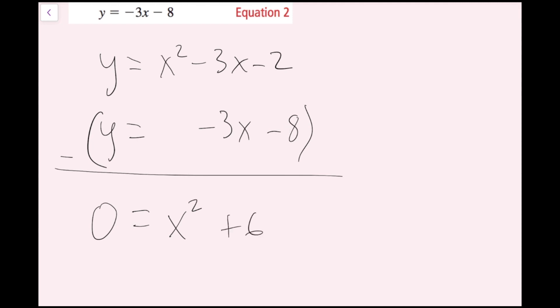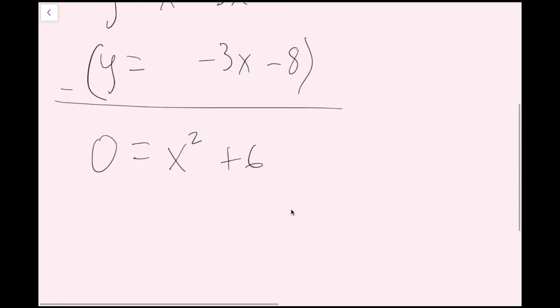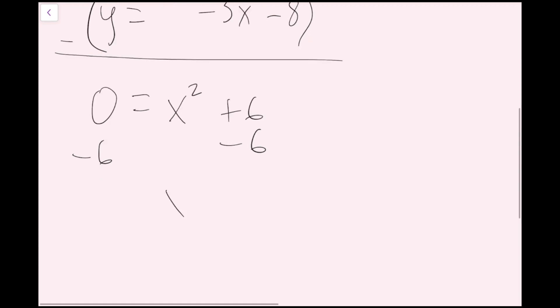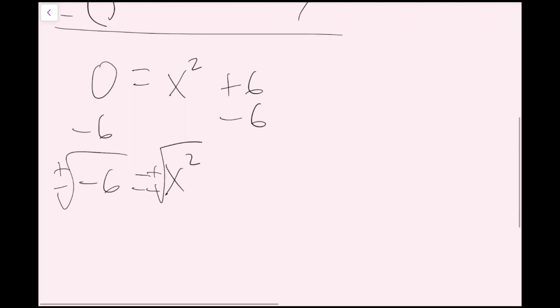This equation is much easier to solve — I can just use square roots. If I subtract 6 on both sides, I get x squared equals negative 6. Taking plus or minus the square root of both sides, I'm taking the square root of a negative number, so there are no real solutions. This is a no real solution case.